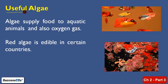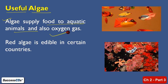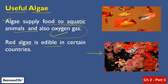Now we have useful algae. Algae, as you know, is green in color, so it can make food — it can photosynthesize. It actually supplies food to aquatic animals, and as a result it also releases oxygen gas, which is taken by the aquatic animals. Red algae is a kind of algae, as you can see in the figure. This red algae is edible in many countries — you can eat it and relish it.